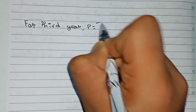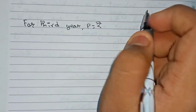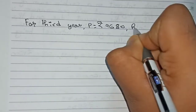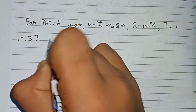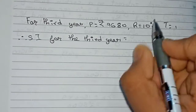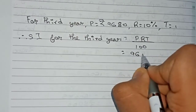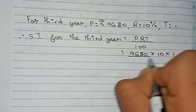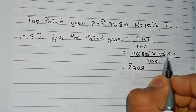For the third year: the amount at the end of the second year, that is 9,680, becomes the principal for the third year. Rate is 10% and time is 1 year. The SI for the third year using the formula PRT/100 is 9,680 into 10 into 1 divided by 100. Cutting the zeros, it remains rupees 968.